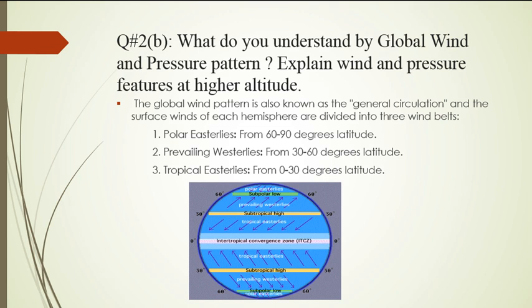Number one is polar easterlies from 60 to 90 degrees, as you can see in the diagram I have also included. Second type is prevailing westerlies from 30 to 60 degree latitudes. Third is tropical easterlies from 0 to 30 degree latitude. I have also included a picture to help understand the three types of global wind and pressure patterns.